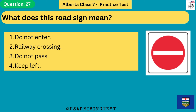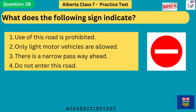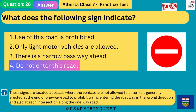What does this road sign mean? 1. Do not enter. 2. Railway crossing. 3. Do not pass. 4. Keep left. The answer is 1: do not enter. These signs are located at places where vehicles are not allowed to enter. It is generally erected at the end of a one-way road to prohibit traffic entering the roadway in the wrong direction, and also at each intersection along the one-way road. What does the following sign indicate? 1. Use of this road is prohibited. 2. Only light motor vehicles are allowed. 3. There is a narrow pathway ahead. 4. Do not enter this road. The answer is 4: do not enter this road.